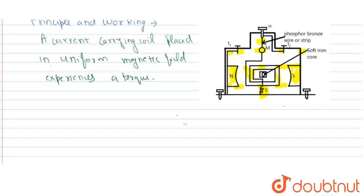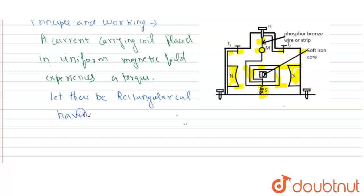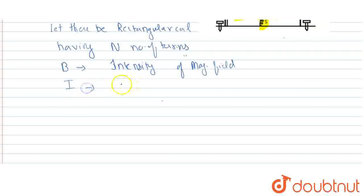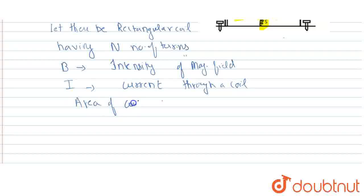For its working, we suppose that there is a rectangular coil having N number of turns. B will be the intensity of the magnetic field, and I is the current flowing through the coil. The area of cross-section of the coil is equal to l into b, where l is the length and b is the breadth of the coil.